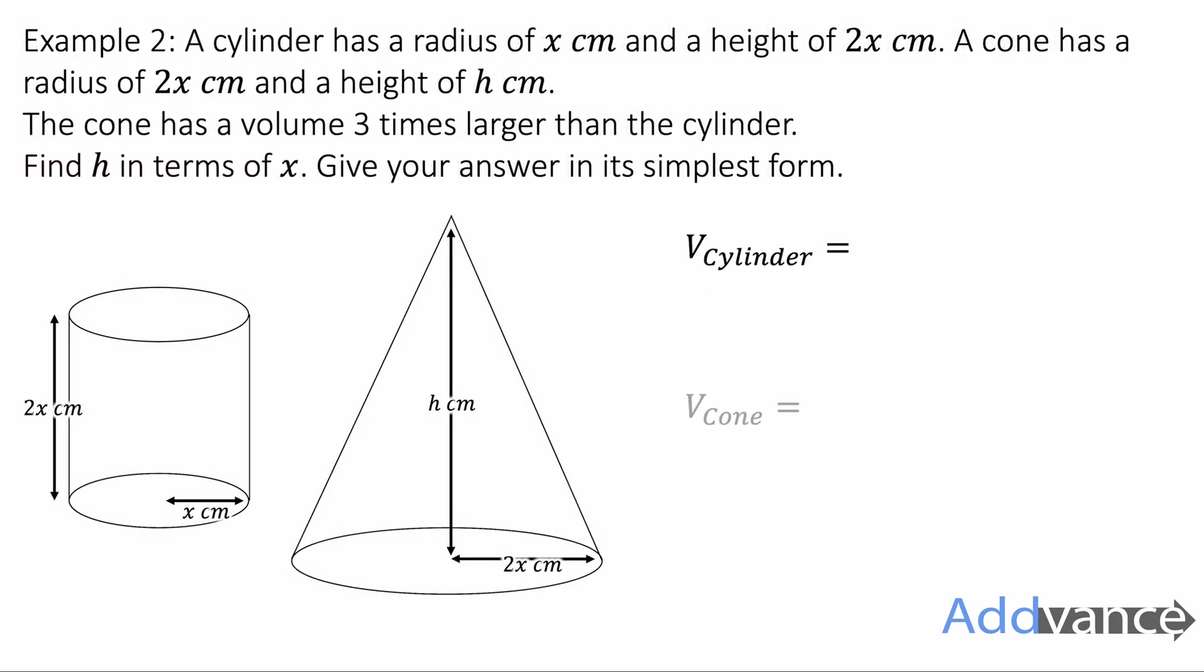But we're using the information from the question. So let's work out the volume of the cylinder in terms of x and the volume of the cone in terms of x and h. And then after that, we're going to realize that the volume of the cone is three times the volume of the cylinder as it says in the question. The volume of the cylinder is given by πr²h, and the volume of the cone is ⅓πr²h. These are equations given to you in your formula booklet.